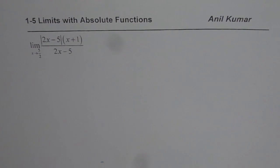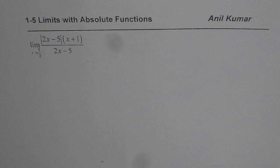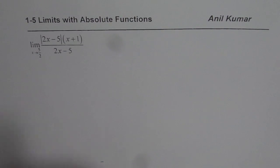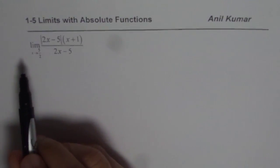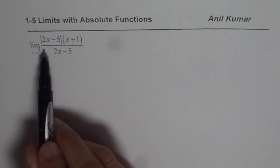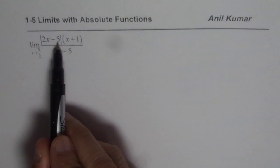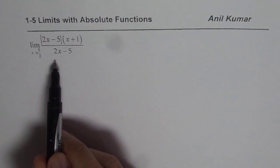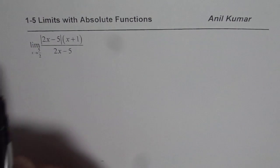I am Anil Kumar and in this video we will understand how to find limits when absolute functions are involved. Remember, absolute functions are piecewise functions. The question before us is the limit of the function: absolute value of 2x minus 5, times x plus 1, divided by 2x minus 5.